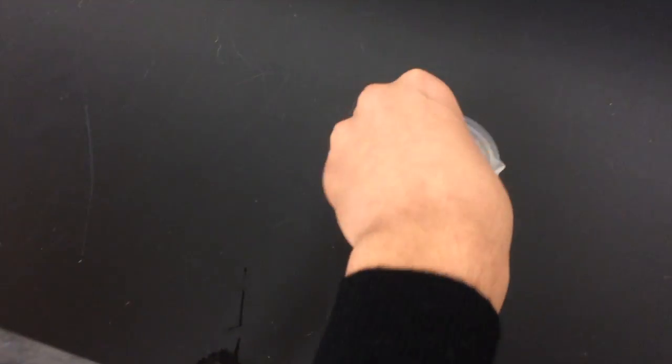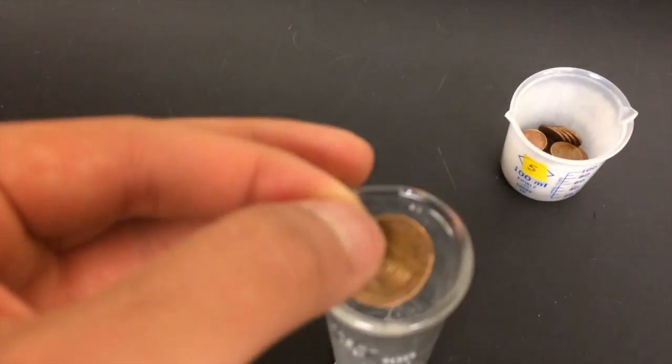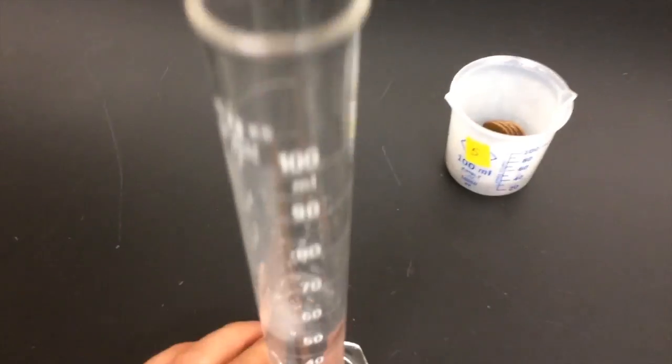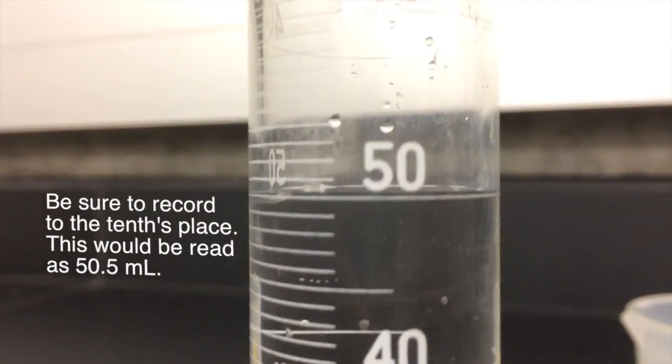To record the volume, go ahead and use a 100 milliliter graduated cylinder, that way your pennies don't get stuck inside the cylinder while they're going down. And to start, go ahead and record your initial volume, and we've marked the meniscus there with an arrow.